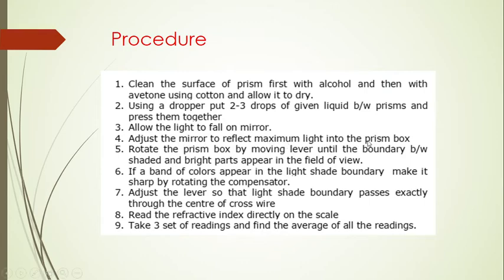Step 4 — adjust the mirror to reflect maximum light into the prism box. Step 5 — rotate the prism box by moving the lever until the boundary between shaded and bright parts appears in the field of view. Step 6 — if a band of color appears, make it sharp by rotating the compensator. Step 7 — adjust the lever so the light-shade boundary passes exactly through the center of the cross-wire. Step 8 — read the refractive index directly on the scale. Step 9 — take three readings and calculate the average.